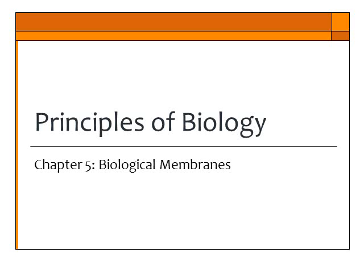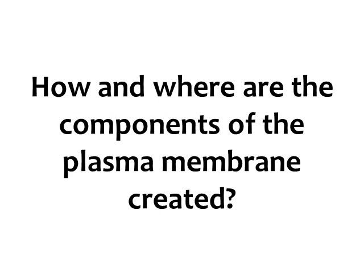This is part 2 of 3 on Chapter 5, Biological Membranes. In this part of the chapter, we're going to look at how and where the components of the plasma membrane are created. Remember, in the first part of the chapter, we talked about how the plasma membrane is a fluid mosaic model. We're going to look at lipids — specifically phospholipids — proteins, and carbohydrates, including that glycosylation part where we attach a carbohydrate to a lipid or to a protein.